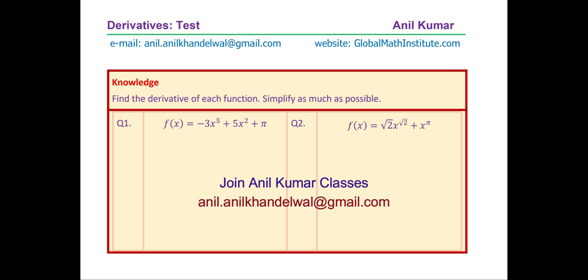So the very first one knowledge base is simple. We are given a polynomial function and the derivative can be found very easily using the power rule. So 5 times minus 3 is minus 15x to the power of 4, 1 power less, and here we have plus 10x. Pi is a constant, so its derivative is 0. So that is what the result will be.